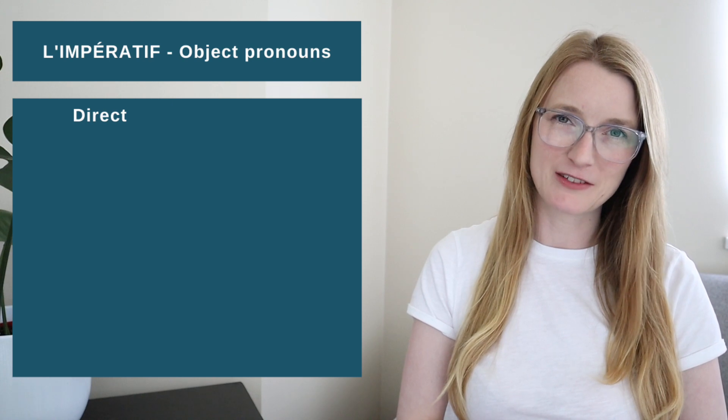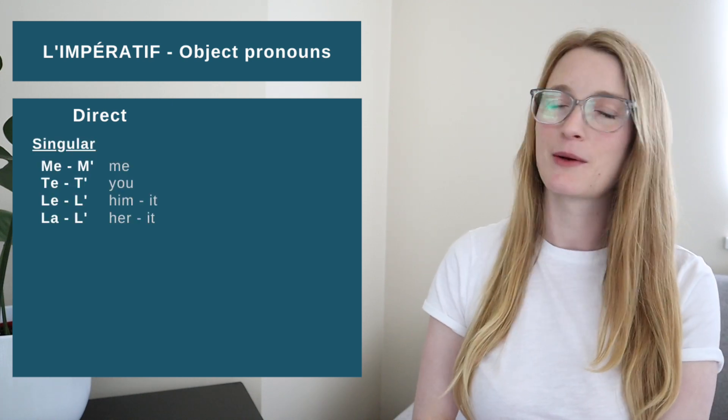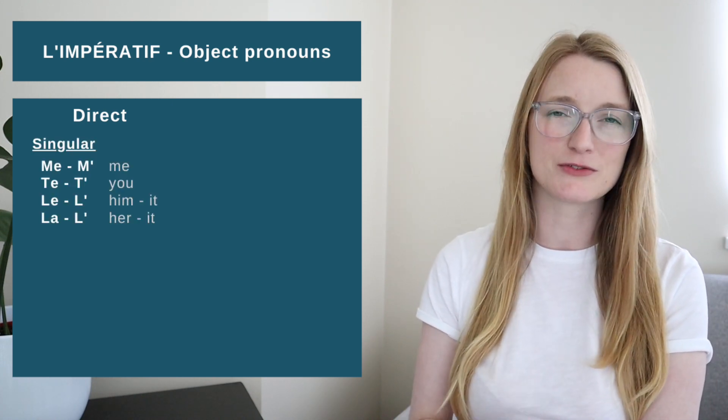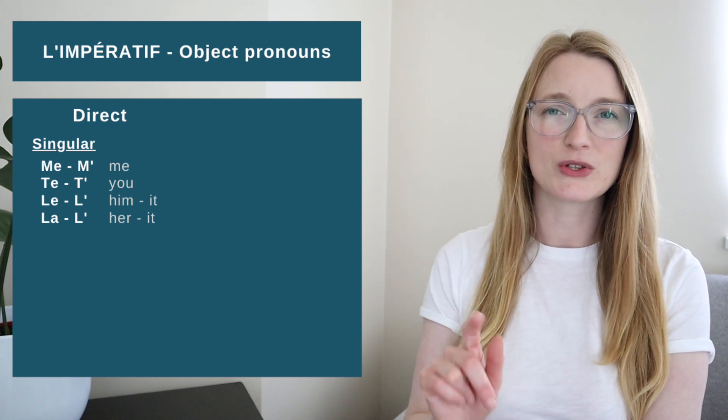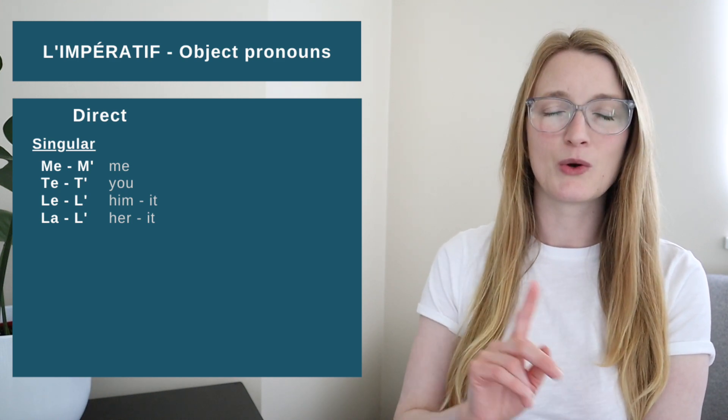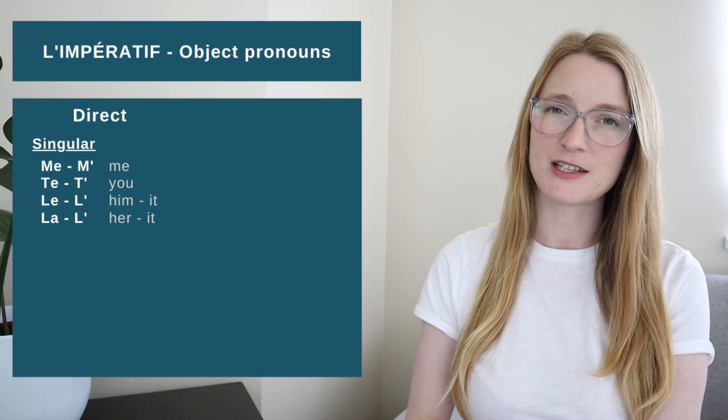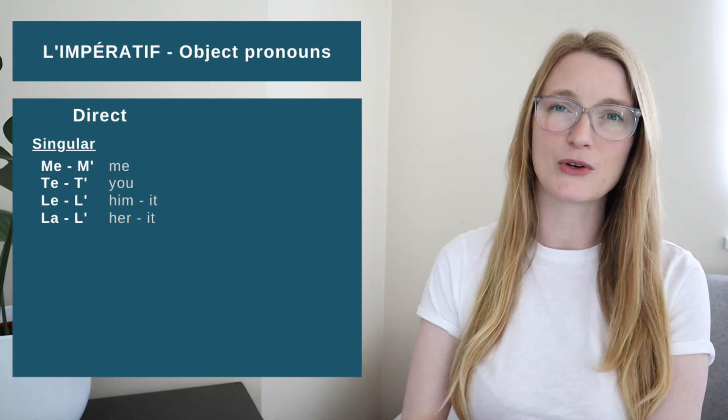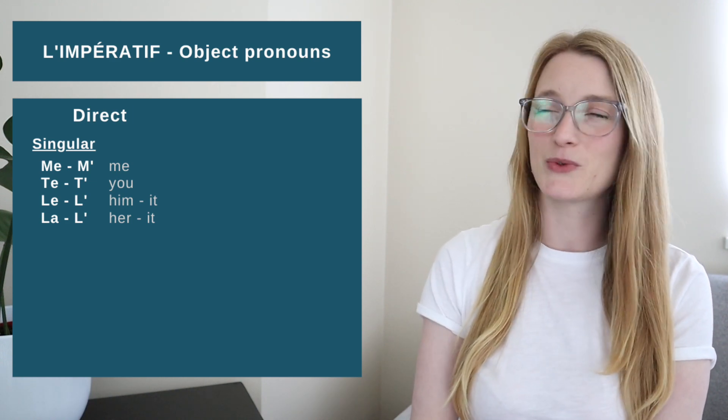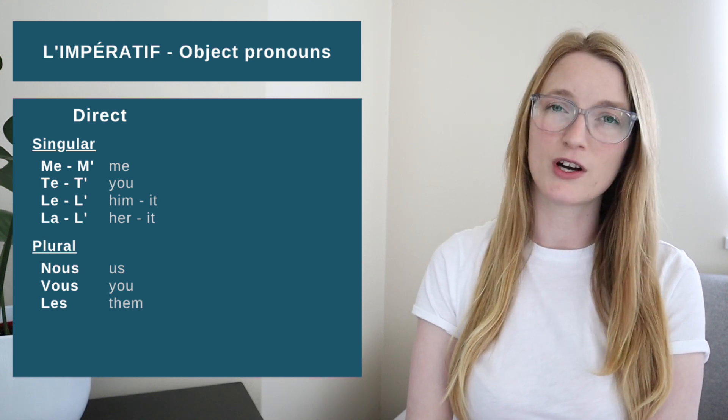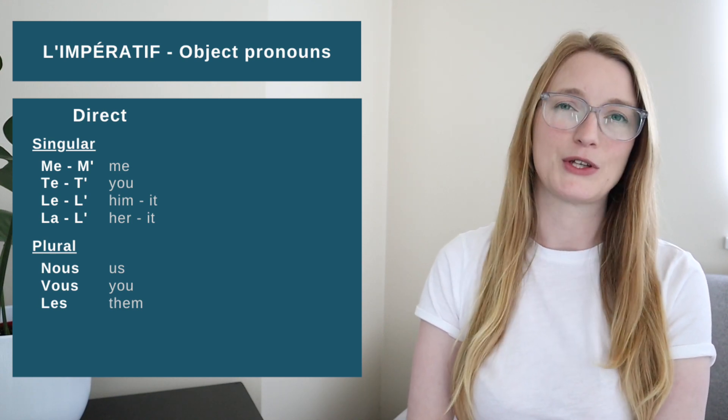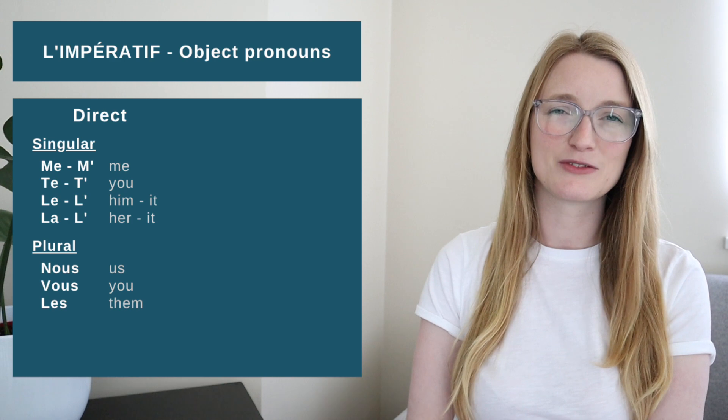So for direct object pronouns, we have for the singular Me or M apostrophe for me. Te or T apostrophe for you. Le or L apostrophe for him or it. La or L apostrophe for her or it. Then we have the plural. Nous for us. Vous for you. And les for them.